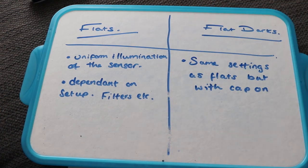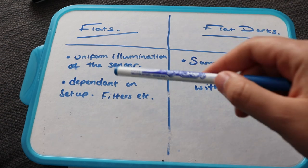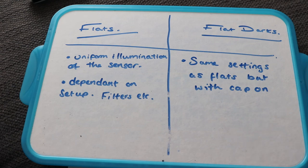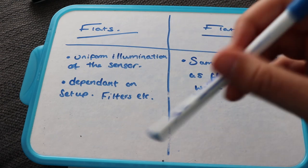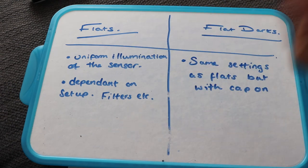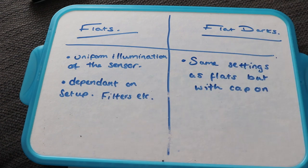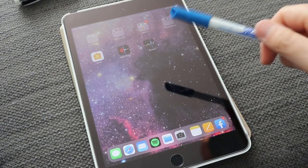So flats, we want a uniform illumination of the sensor, and it's also dependent on setup. So if you change a filter or move your camera or sort of do anything to that optical image train, you're going to want to take a new set of flats.